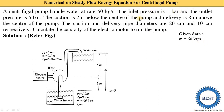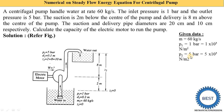Inlet pressure is 1 bar and outlet pressure is 5 bar, so p1 = 1 bar and p2 = 5 bar. In the steady flow energy equation we need pressure in Newton per meter square, so 1 bar = 1×10⁵ N/m² and p2 = 5×10⁵ N/m².